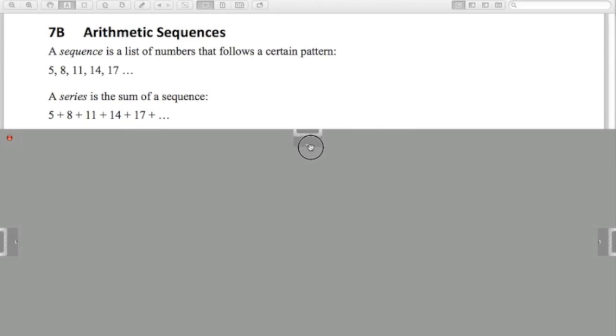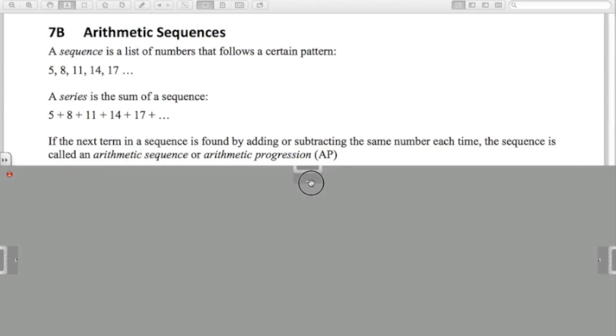When we talk about a series, a series is just the sum of a sequence. Some people get those names confused. What we're going to do is look at some formulas for getting the nth term of a sequence like this and for the sum of n terms with a few examples.